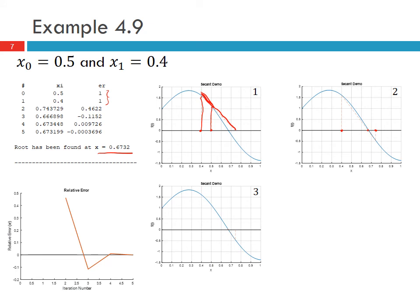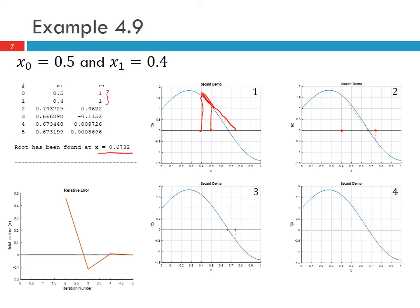Here we're using the 0.743 and the 0.6668. Draw a line between them, where that intersects the x-axis gives us our next estimate which is 0.673. Now you can't really see the lines anymore but we've converged on the root there.